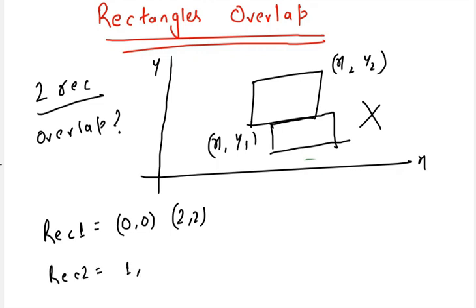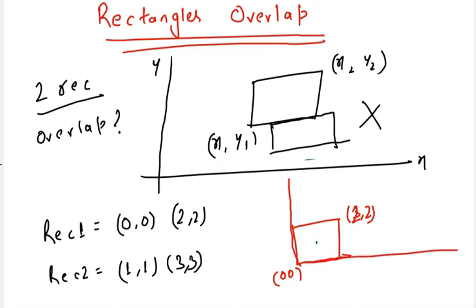So if we draw the first rectangle, let's say this is (0,0) and this is (2,2). This will be my axis. And for the second rectangle, this point would be (1,1) and this point would be (3,3). So that's my second rectangle. From the figure it is clear that they overlap, and because they overlap we will return true as our answer.